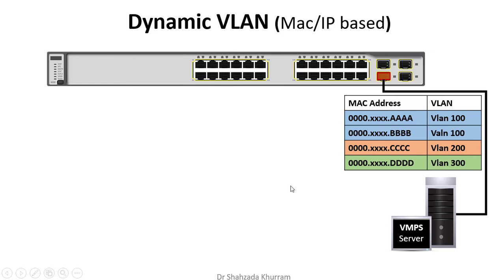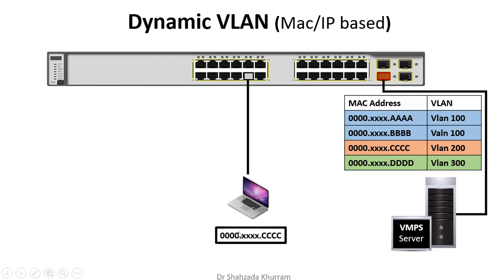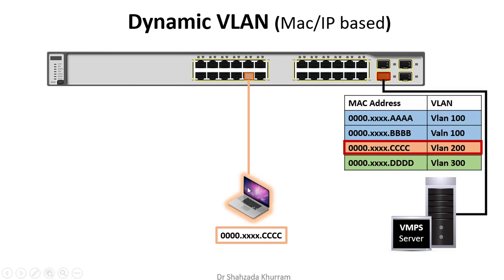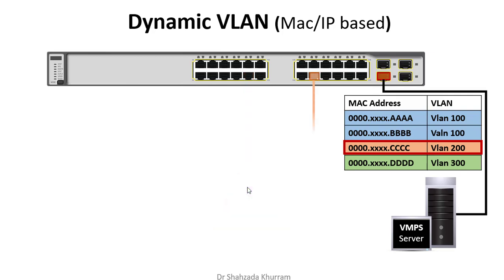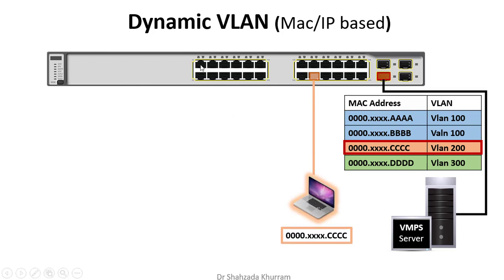Hota kya hai — jab switch ke saath koi PC connect karta hai, to sabse pehle uska MAC address VMPS server check karta hai. Jab is PC ka MAC address check karta hai to apne database mein usko dekhta hai. Agar woh already hai aur usko VLAN 200 assign hui hai, to woh usko VLAN 200 ka part bana deta hai. It doesn't care ke woh kis port par connect karta hai — kisi bhi port par connect karega, uska MAC address match karega aur usko VLAN ka member bana deta hai.